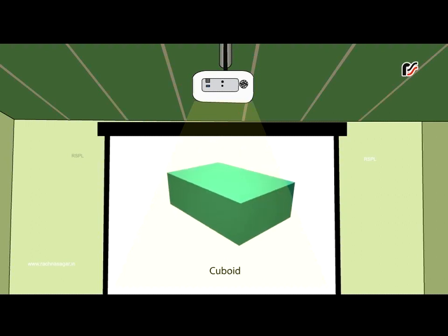This is a cuboid. It also has six faces, twelve edges and eight corners. All the faces of a cuboid are in the shape of a rectangle.